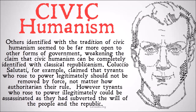Coluccio Salutati, for example, claimed that tyrants who rose to power legitimately should not be removed by force, no matter how authoritarian their rule. However, tyrants who rose to power illegitimately could be assassinated completely morally, as they had subverted the will of the people and the republic. For Salutati, even if a ruler was horrible, if they followed the rule of law to be elected, the people didn't have a right to overturn them. However, if someone gained power through a coup, the people did have a right to overturn them regardless of their individual policies, because they had broken the framework itself and stepped outside the broad republic that was trying to harness the will of the people.